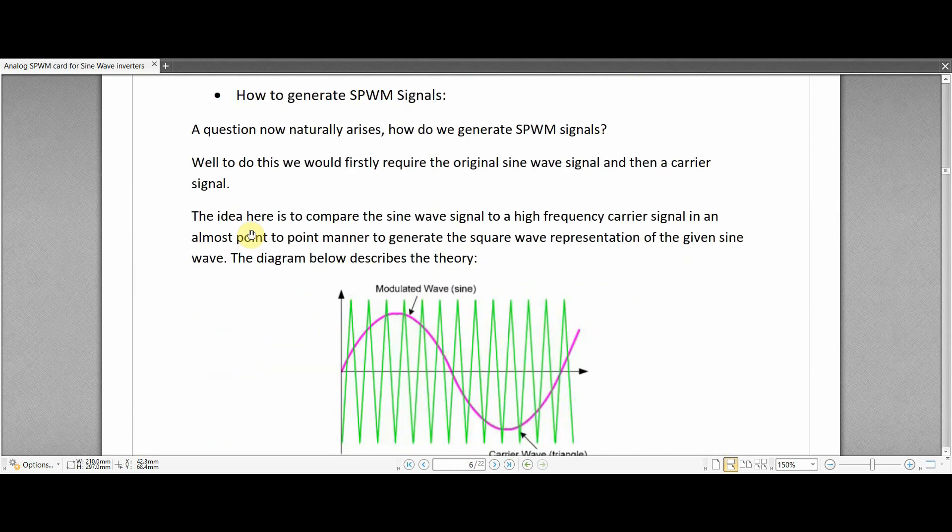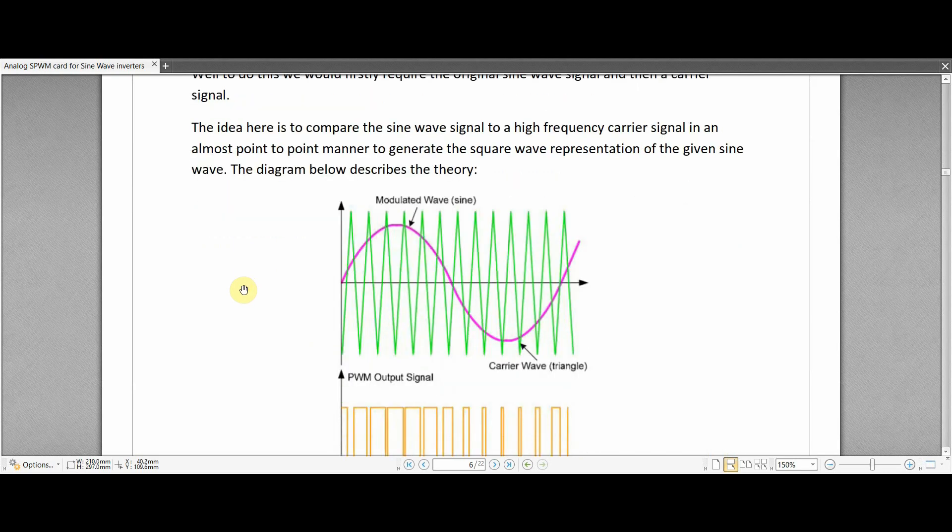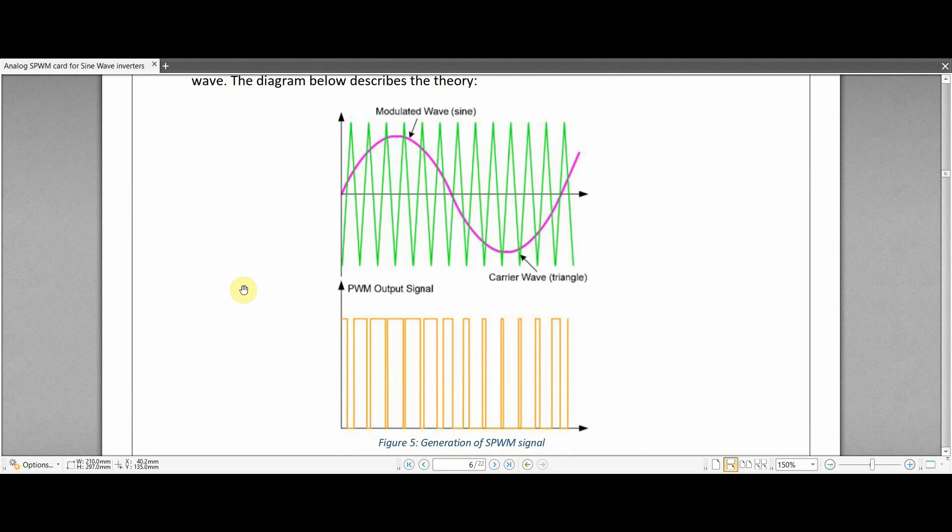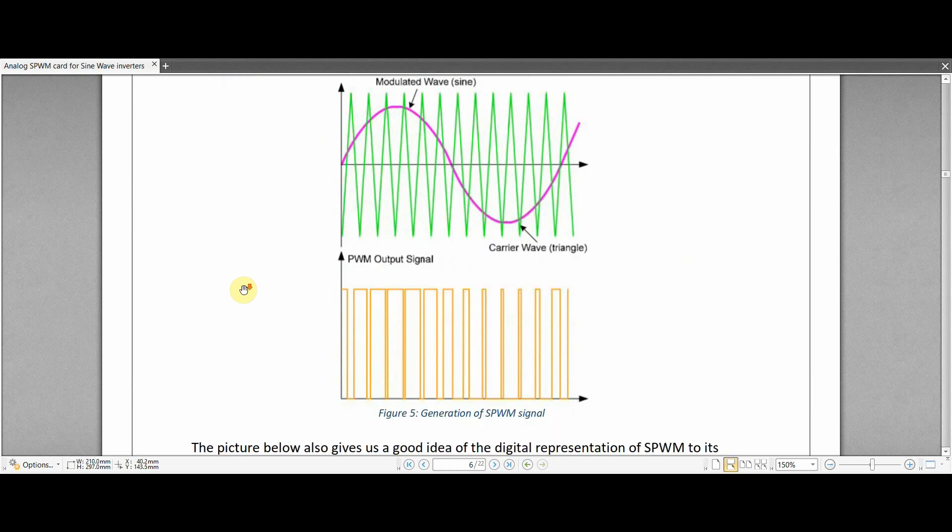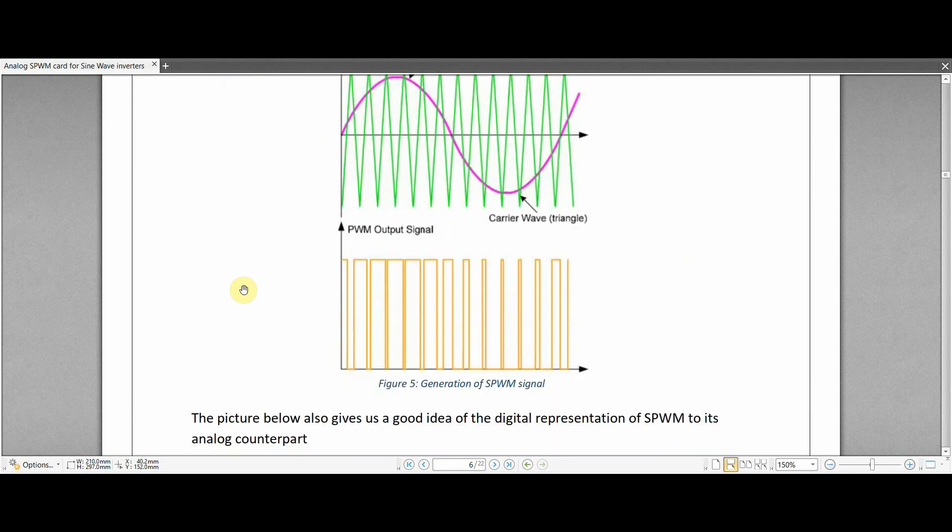To generate the SPWM signal we basically need two independent signals. First one is the sine wave to which we wanted to convert it into SPWM and a carrier signal. The carrier signal is usually a high frequency triangular wave, the frequency of which is much higher than that of the sine wave. These two waves are then compared through a comparator and we get the SPWM signal with varying duty cycle according to the amplitude of the sine wave.